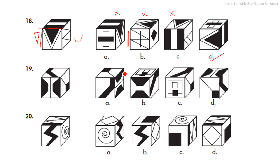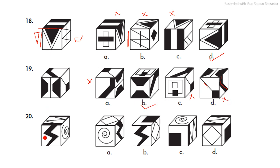Moving on to the next question. Here we see a tick mark, and the long side of the tick mark is coinciding with the diagonal line. We need to find which option fulfills the same criteria. In option A, the diagonal is in contact with the small side of the tick, so it is wrong. In option C, the tick is not touching at all, so it is wrong. In option D, the line is not touching the tick mark at all, so it is eliminated. The answer is B.